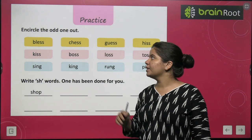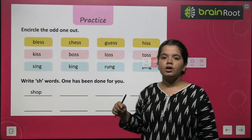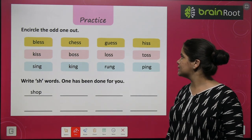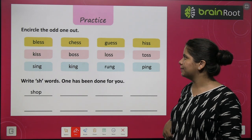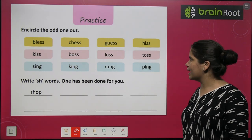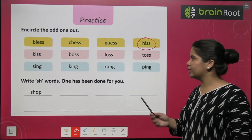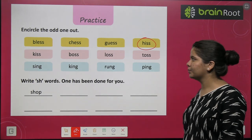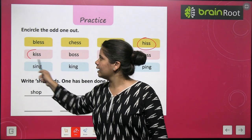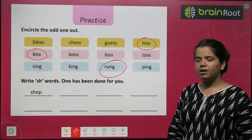Now encircle the odd one out — the word that looks most different from the others. Bless, chess, guess, his — which one is different? 'His' — because it is a four-letter word while the others are five-letter words. Kiss, boss, loss, toss — odd one out is kiss. Sing, king, rung, ping — odd one out is rung, because the others have the I sound.